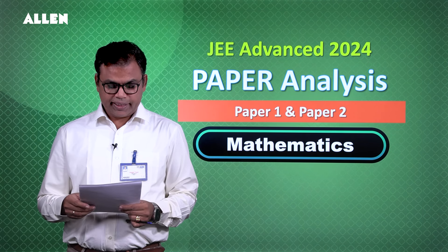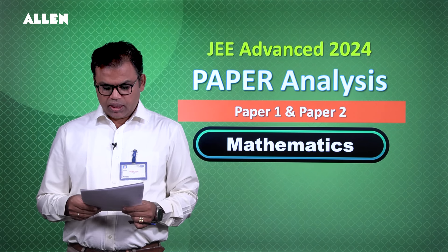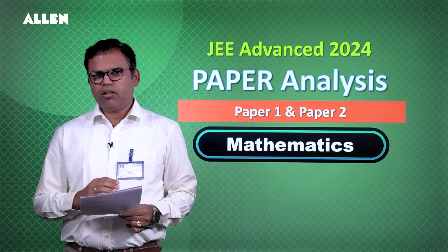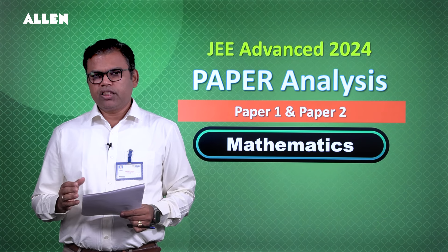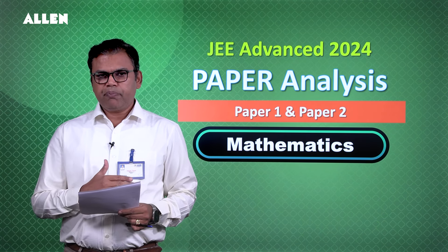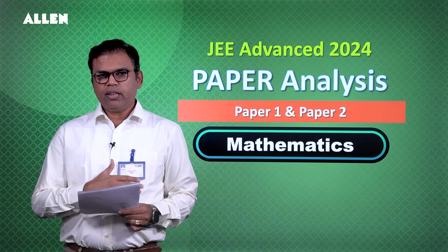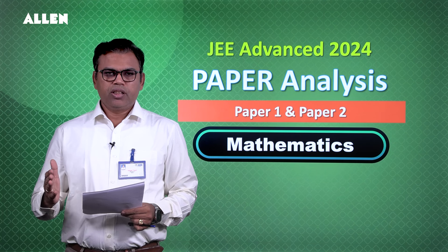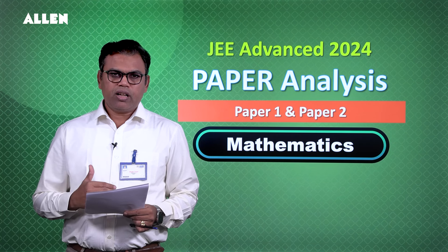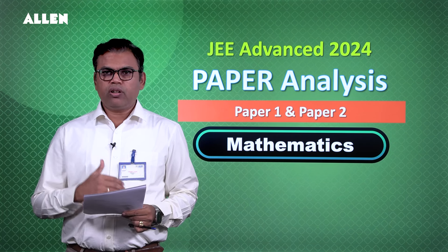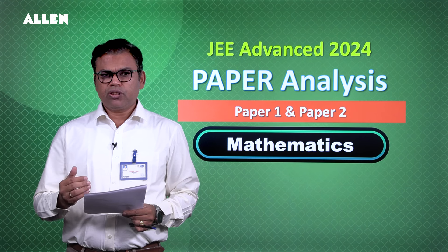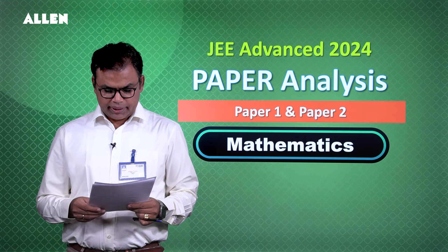Regarding class 11 vs 12 distribution, something unusual was observed this time — the paper was heavily tilted towards class 12, with around 70% questions from the class 12 syllabus and only 30% from class 11 syllabus.